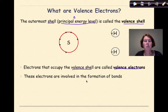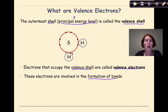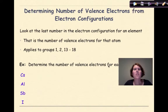You might ask: what's the point of a valence electron? Ultimately, valence electrons are involved in the formation of bonds. If I look at this sulfur atom — where each dot represents a valence electron — and hydrogen with its one valence electron, these valence electrons will come together and form bonds.